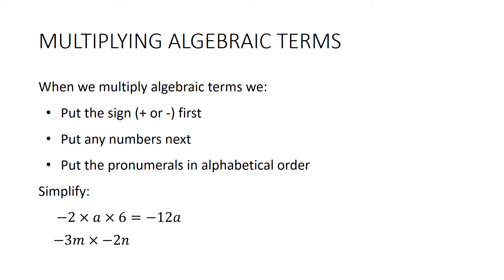What about this one? Negative 3m times negative 2n — so minus times a minus makes a plus. 2 threes are 6, and then mn. We actually don't need to write the positive sign there.